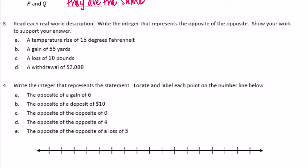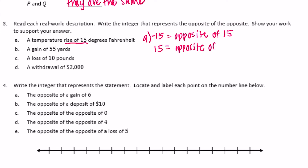Number 3: read each real-world description, write the integer that represents the opposite of the opposite, show your work and support your answer. A: a temperature rise of 15 degrees Fahrenheit. Rise means positive 15, so we're starting with 15. The opposite of 15 would be negative 15. Then the opposite of the opposite of 15 is equal to 15, because the two negatives cancel each other out.